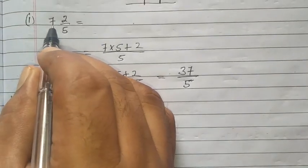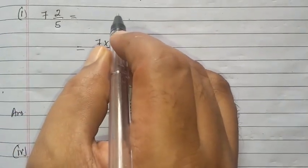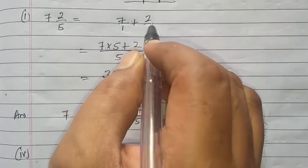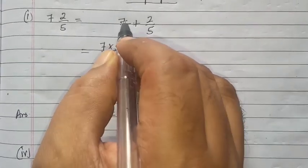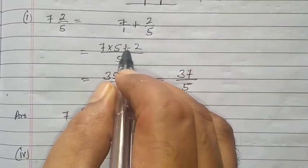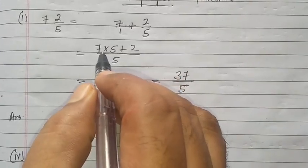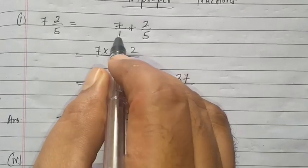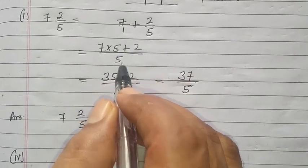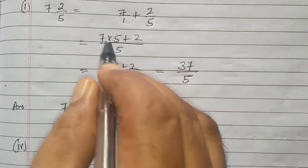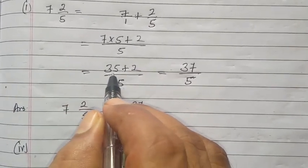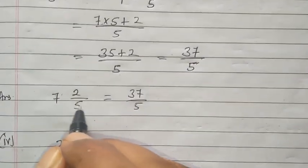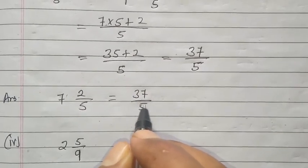Directly take the 7 2/5. We directly write 7/1 plus 2/5. Then cross multiply. 5 multiply here. 7 times 5 plus 2. So what we will get? 7 times 5 is 35 and plus 2. And 5 multiplied with 1, what we will get? 5. So 35 plus 2 is 37 upon 5. So what is the answer? 7 2/5 is equal to 37/5.